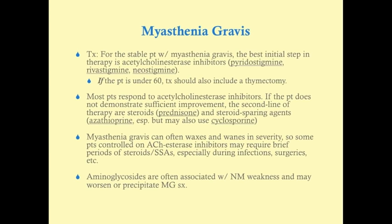For the stable MG patient — stable meaning airway and breathing are adequate — the best initial treatment is an acetylcholinesterase inhibitor. Unlike edrophonium, these are longer-lasting, making them sustainable as therapy. Examples include pyridostigmine, rivastigmine, and neostigmine. Additionally, if the patient is under 60, regardless of chest imaging findings, surgical thymectomy should be included, as it has been shown to improve symptoms long-term.